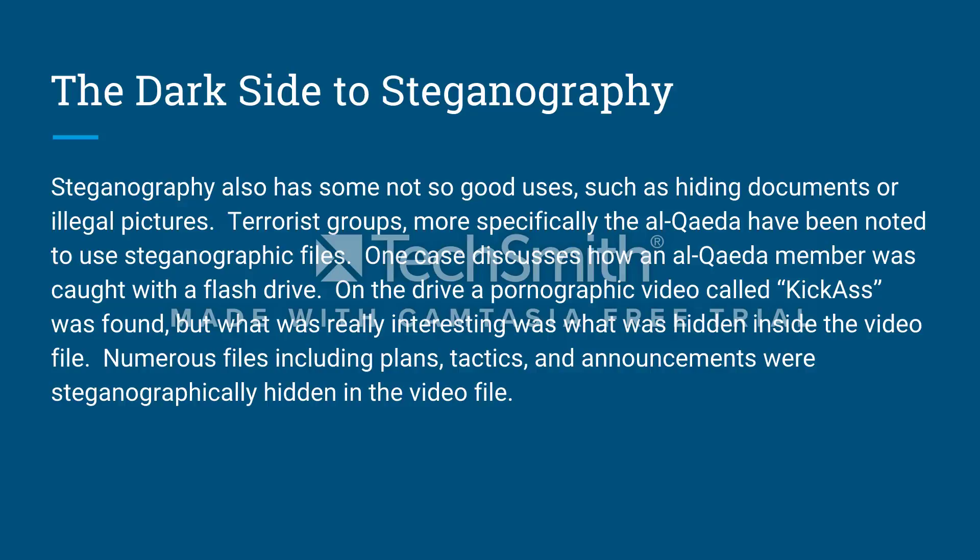Steganography also has some not-so-good uses, such as hiding documents or illegal pictures. Terrorist groups — more specifically Al-Qaeda — have been noted to use steganographic files. One case discusses how an Al-Qaeda member was caught with a flash drive. On the drive, a pornographic video called Kick-Ass was found. But what was really interesting was what was hidden inside the video file: numerous files including plans, tactics, and announcements were steganographically hidden within it.